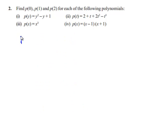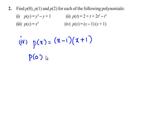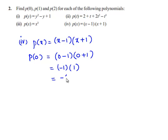Moving to the fourth polynomial, p of x is equal to x minus 1 multiplied by x plus 1. Let us first find p of 0 by substituting 0 in place of x: we get 0 minus 1 multiplied by 0 plus 1. 0 minus 1 is minus 1, and 0 plus 1 is 1. Minus 1 multiplied by 1 is minus 1. Therefore, p of 0 is equal to minus 1.